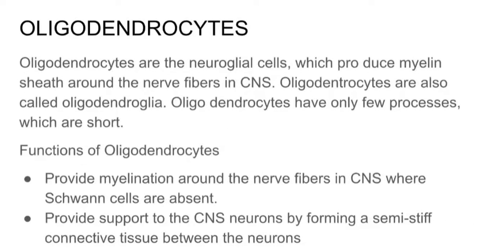Oligodendrocytes are the Neuroglial cells which produce myelin sheaths around the nerve fibers of the CNS. Oligodendrocytes are also called oligodendroglia. They have only few processes, which are short.